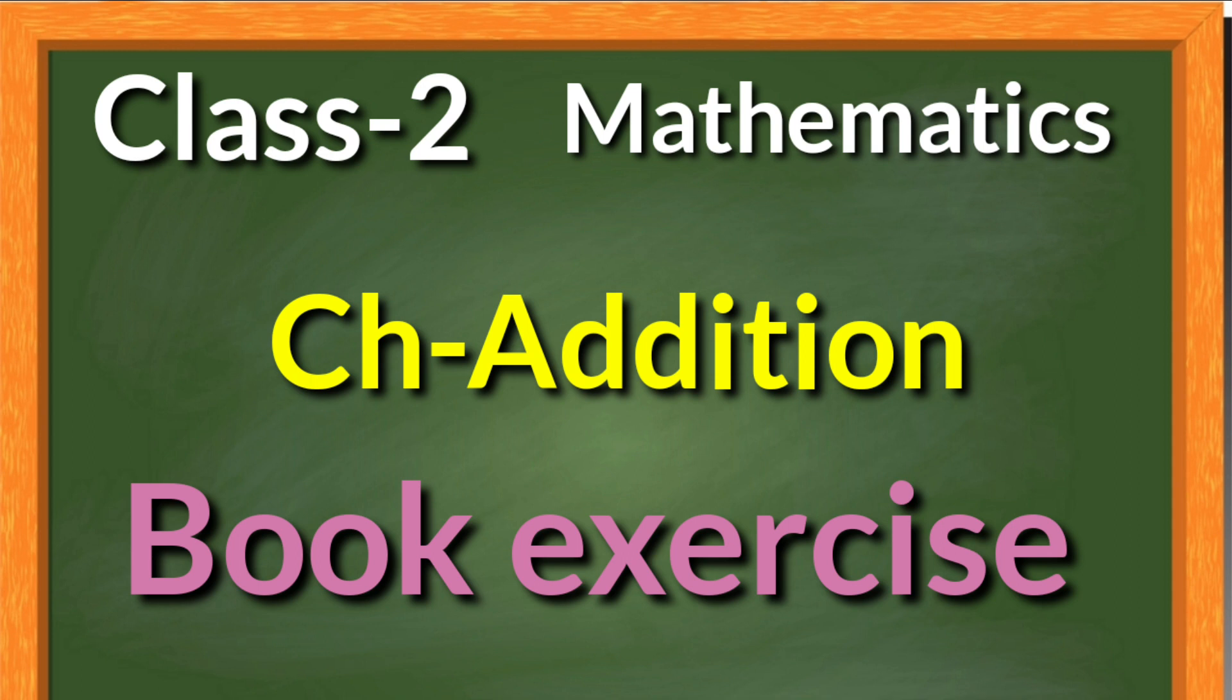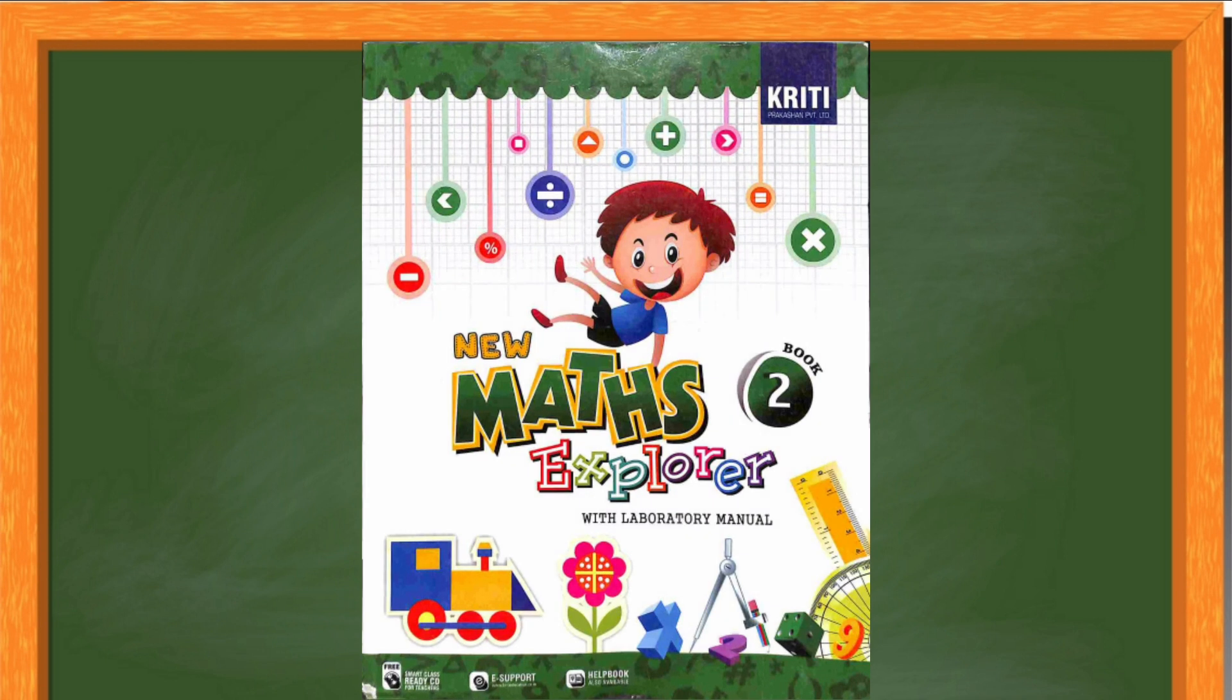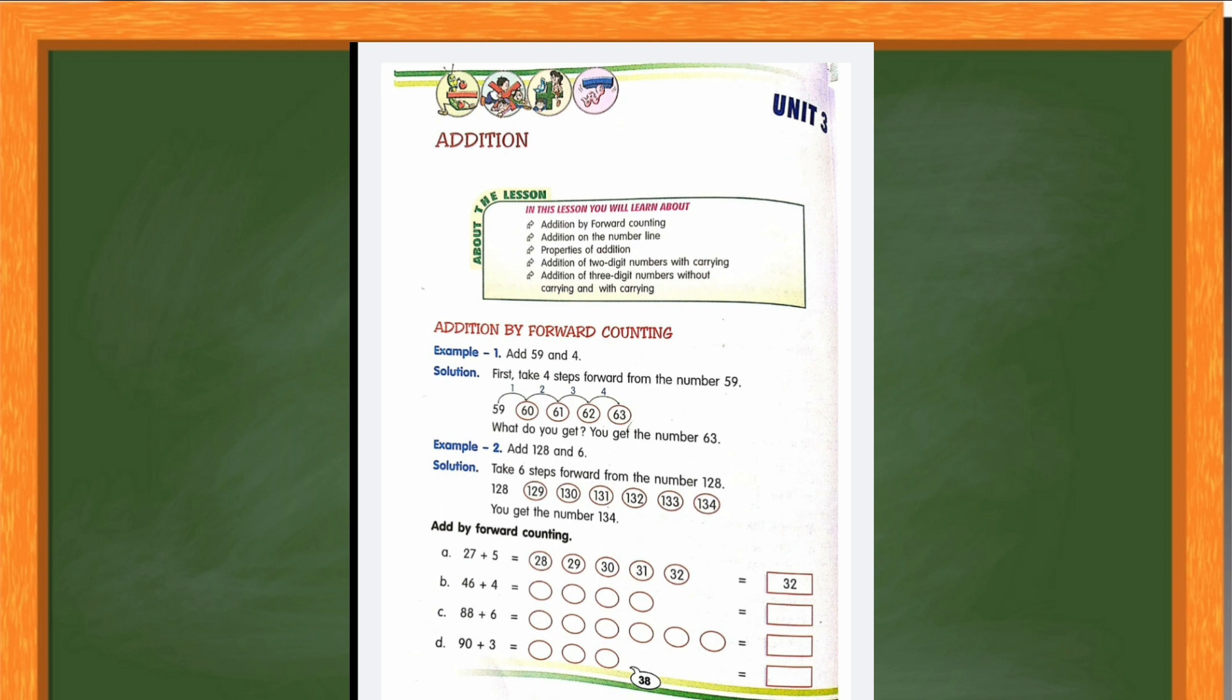Children, our today's class I will start with our maths explorer book. I hope you already have collected the maths explorer book, book 2 for class 2. So our today's chapter is unit 3, that is addition. Now I will start the chapter addition with the page number 38 of your book.